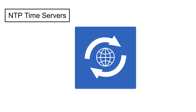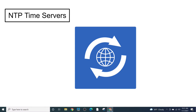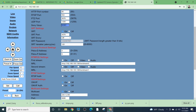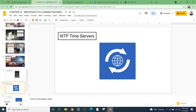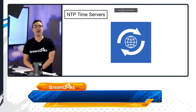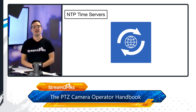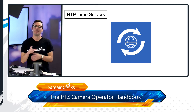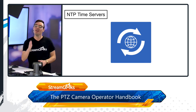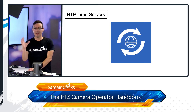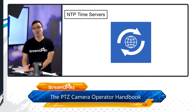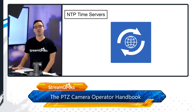Another overlooked feature is NTP time servers. The camera itself can receive an NTP address and server — you can use a Mac one, a Windows one, or even a custom NTP server. This is important when you have multiple PTZ cameras and want to sync video and audio streams together. Every frame of data and every packet transferred over the network can be time-stamped, so the receiving computer can organize and align those pieces of video. We'll have a whole separate video on NTP servers.